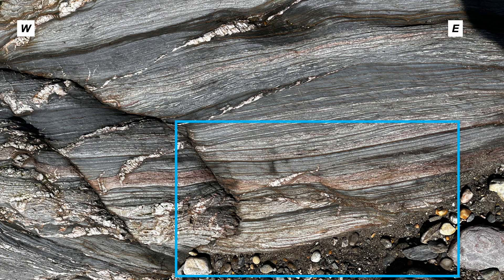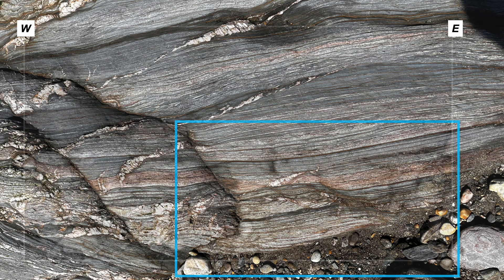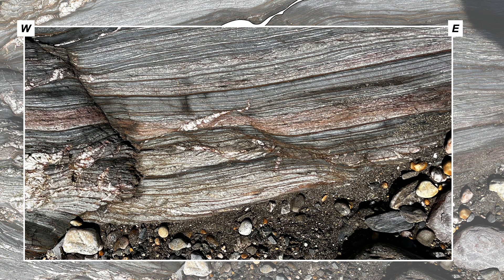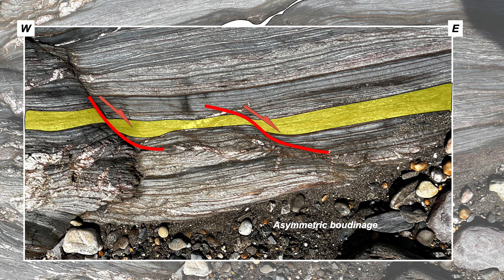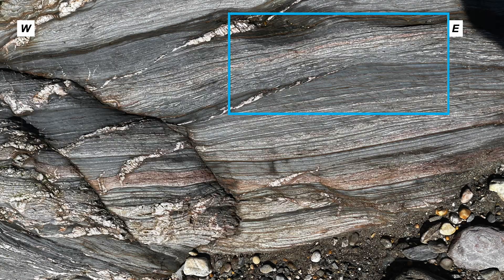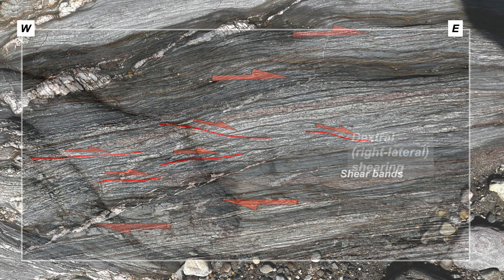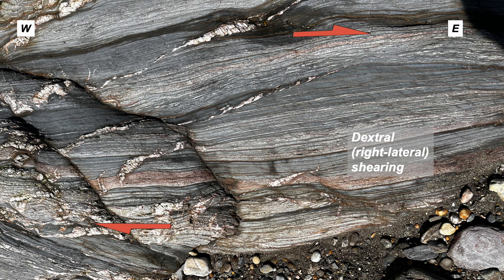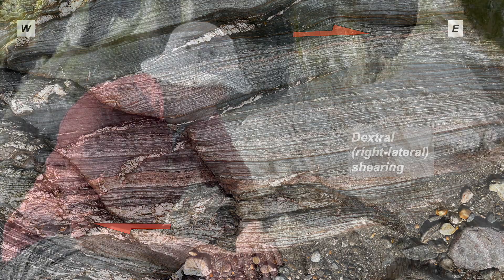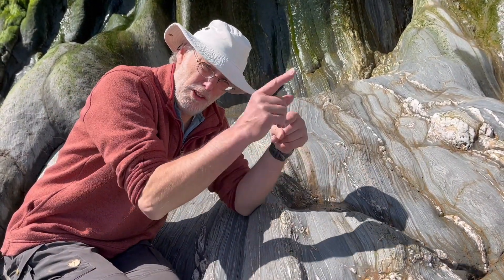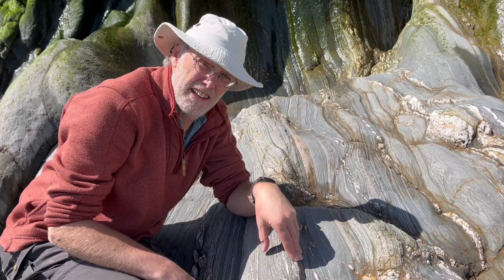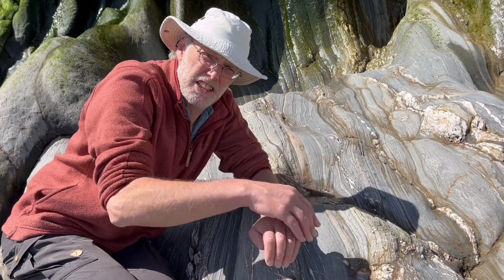Let's look at other shear criteria. Foliation sets are weakly boudinaged, nicked and thinned locally. The asymmetry of the boudinage implies a bulk shear sense. And the main foliation shows little deformation shears — these are shear bands and imply this bulk shear sense. So all these shear sense indicators are consistent, giving this overall sense. Rocks have been flattened this way, but they've also been sheared dextrally, running off in that direction. So combined deformation makes these folds and these rather nice little sheared vein arrays.